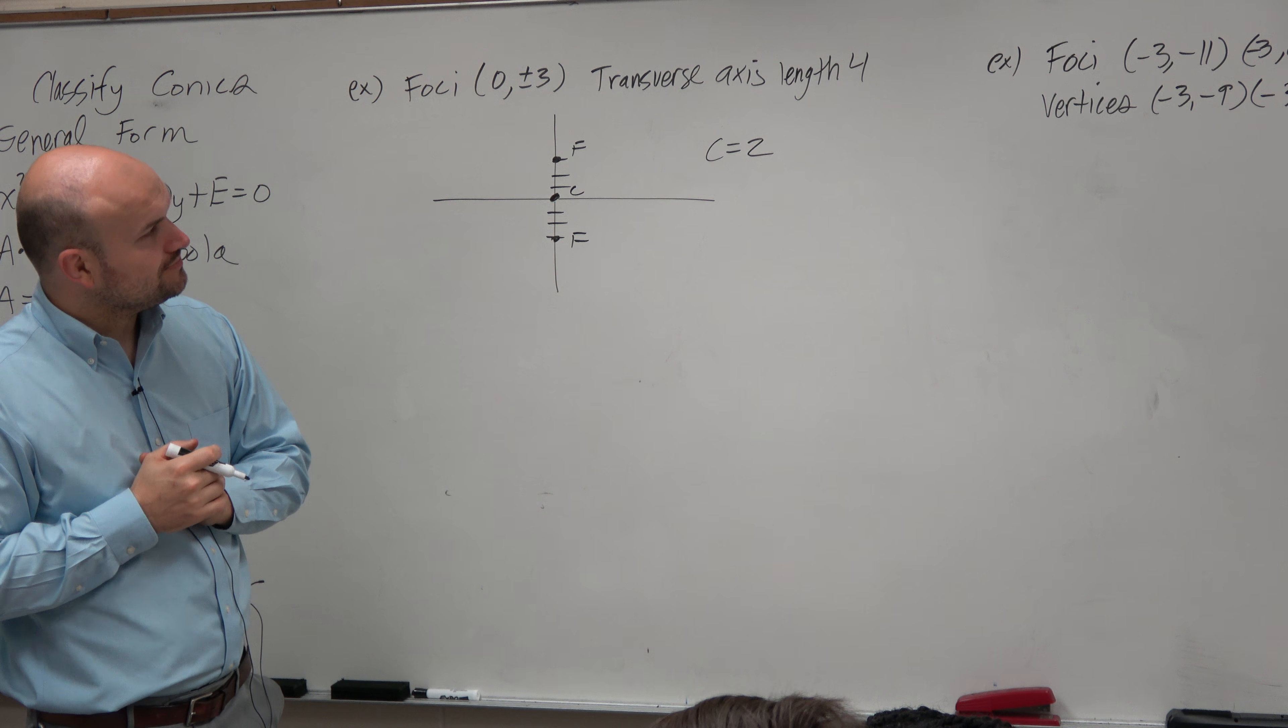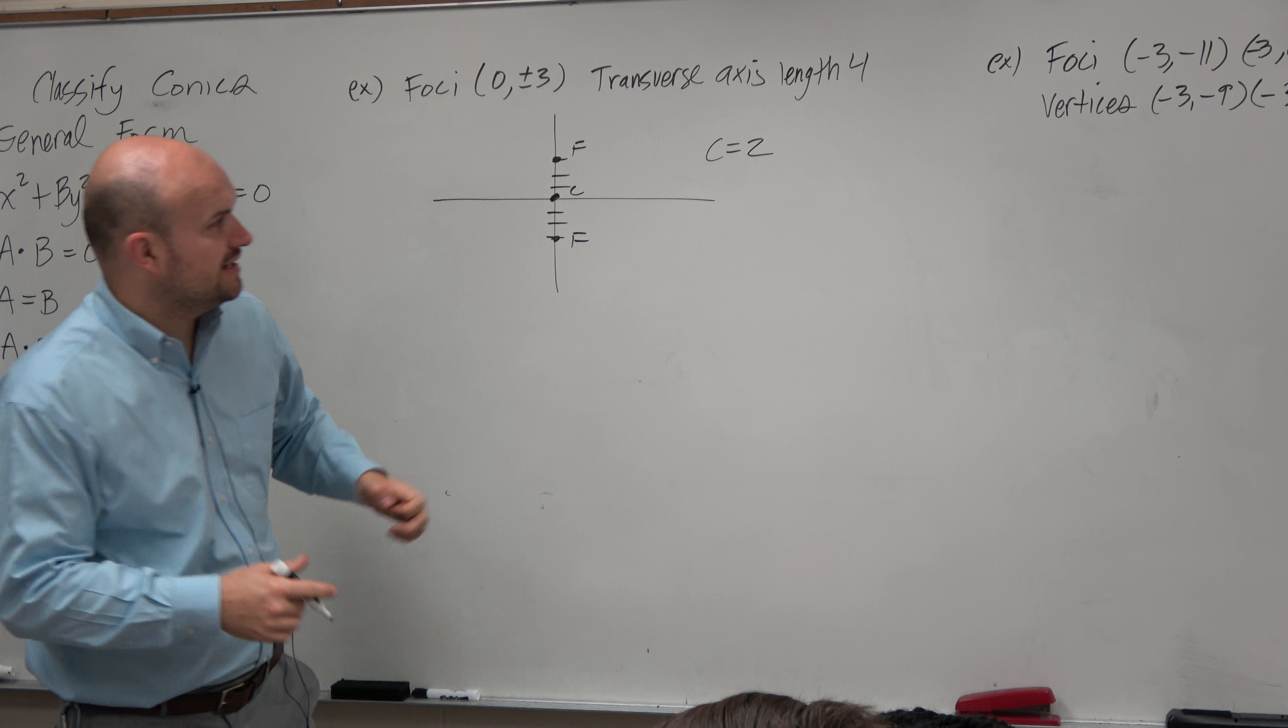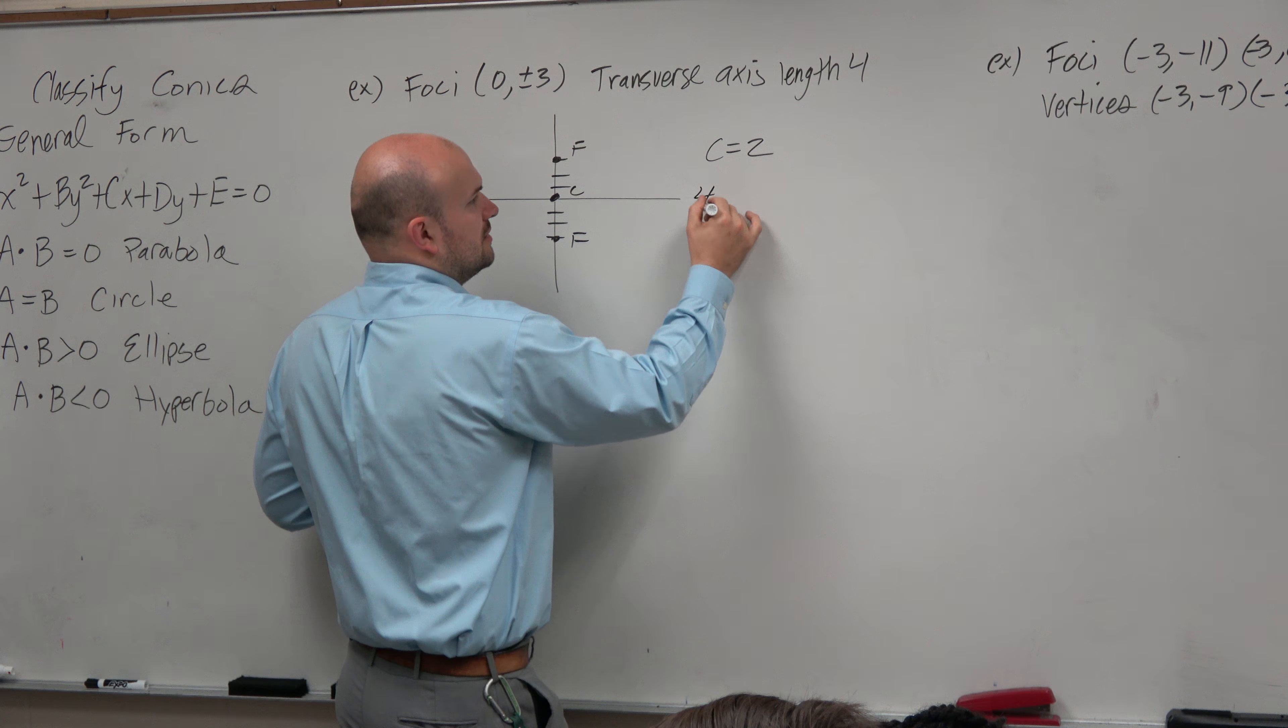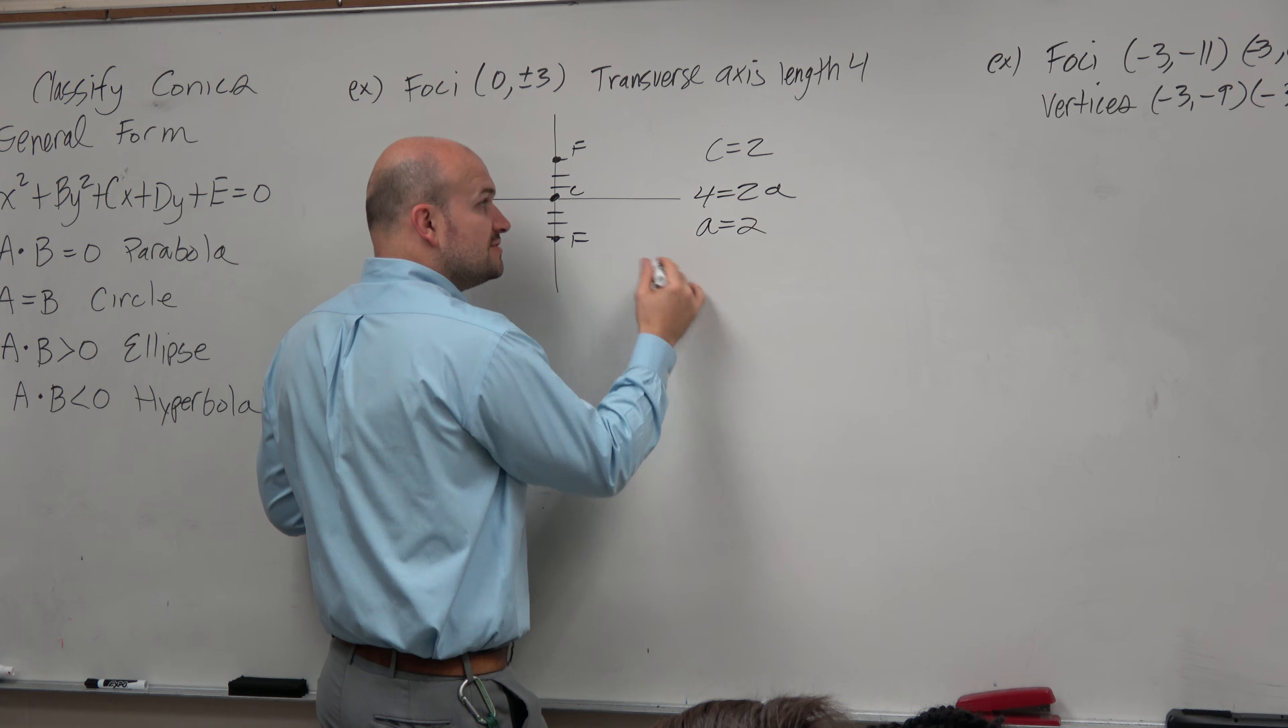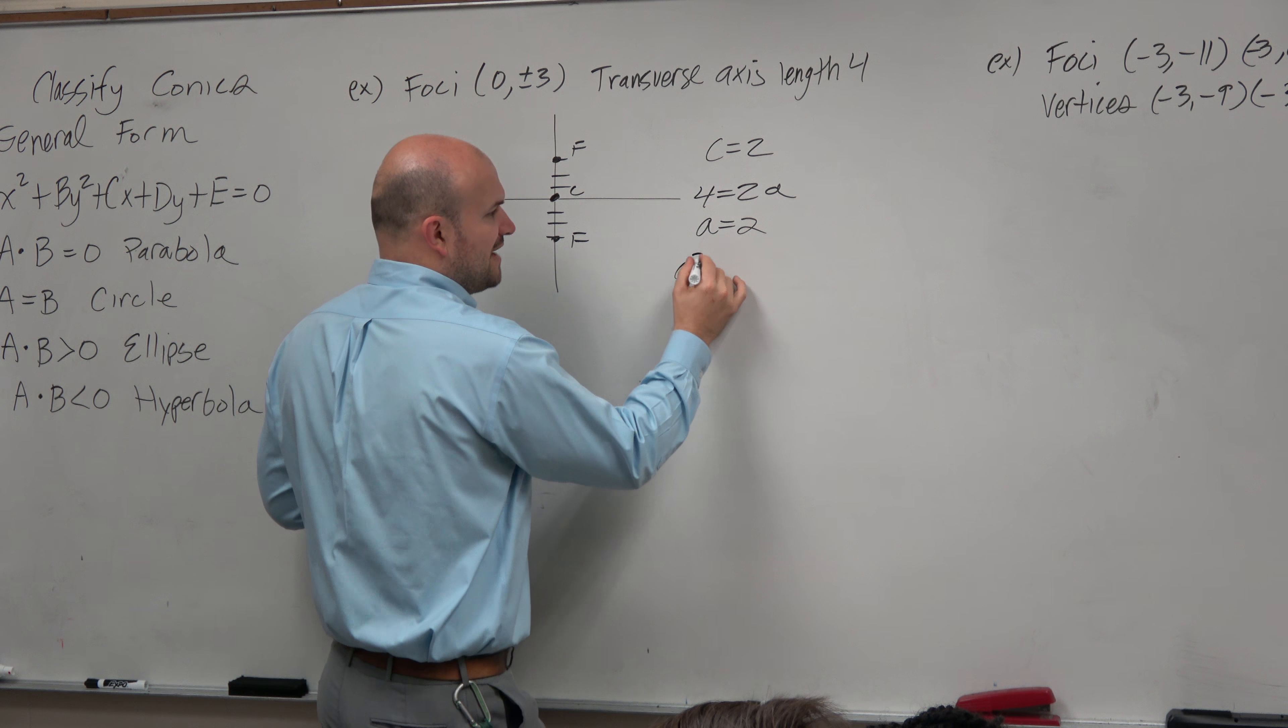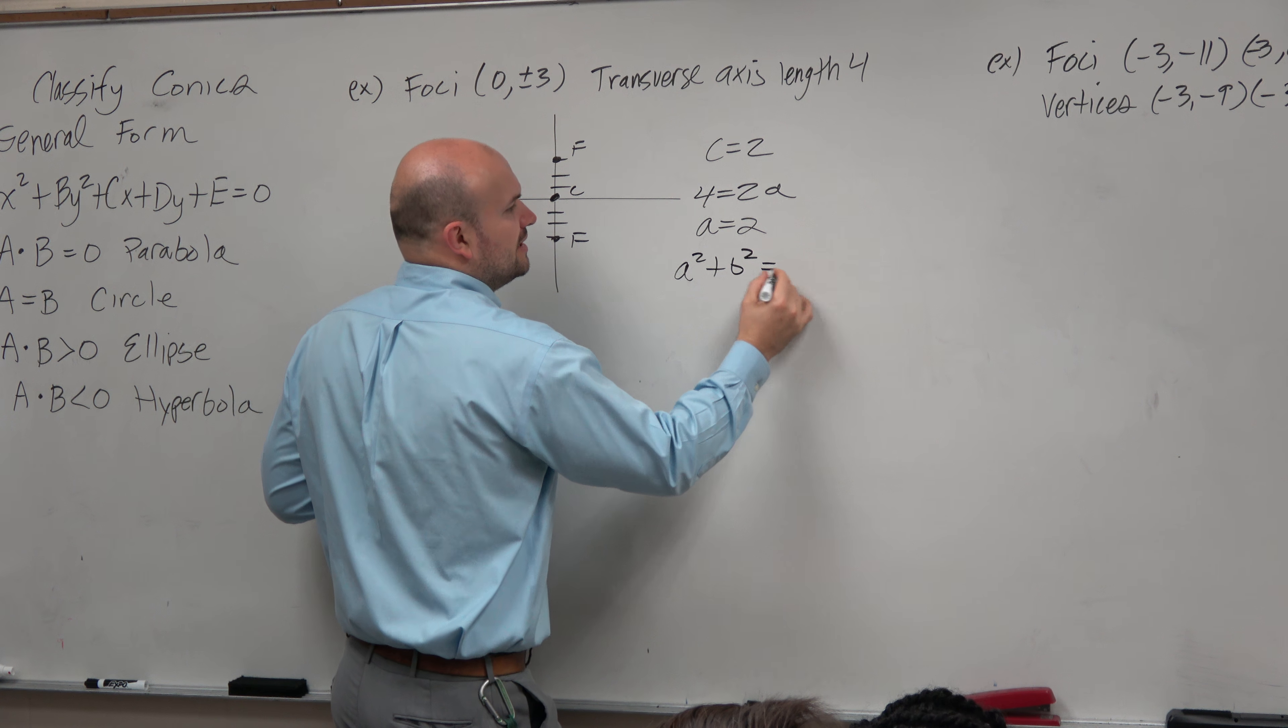So therefore, that's going to be 4 is equal to 2a. That means a is equal to 2. So now, knowing the relationship of a squared, b squared, and c squared,